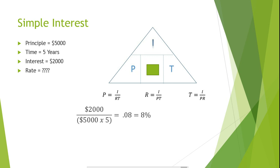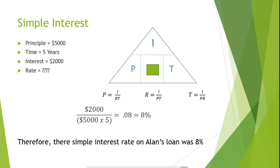So if we plug in our figures, our formula would be 2,000 divided by 5,000 times 5, which would equal 0.08. Therefore, the simple interest rate on Alan's loan was 8%.